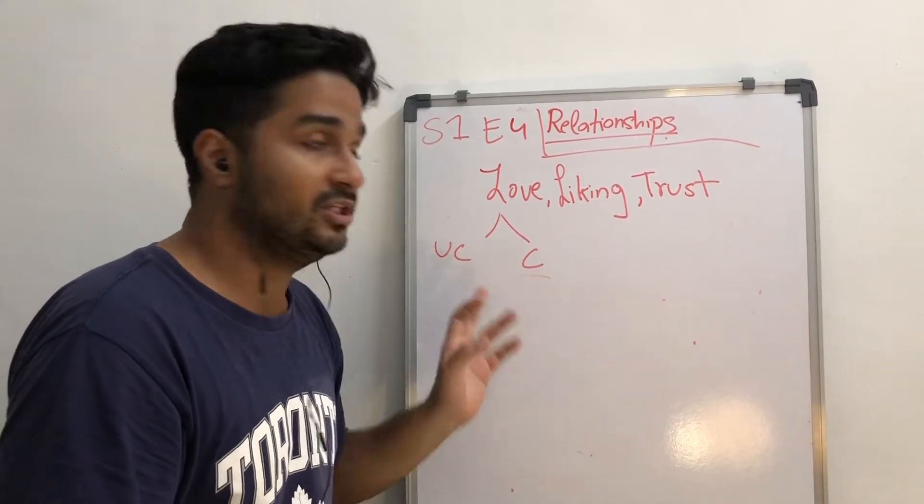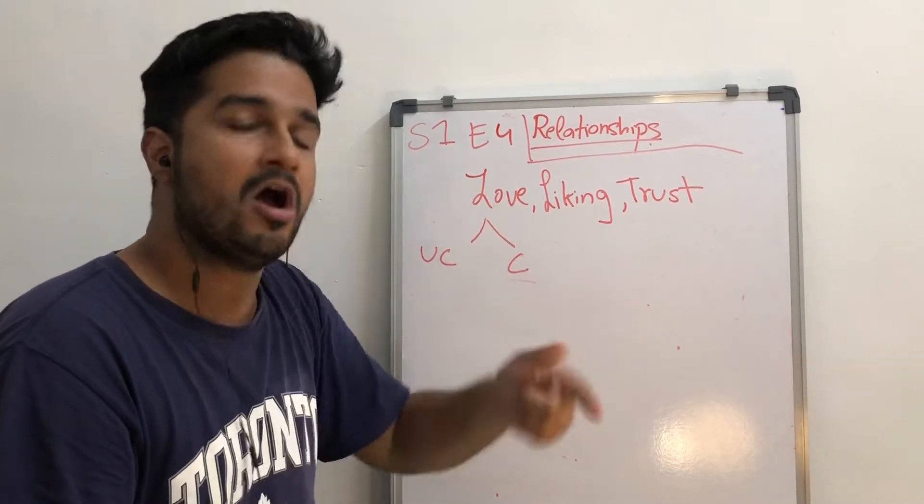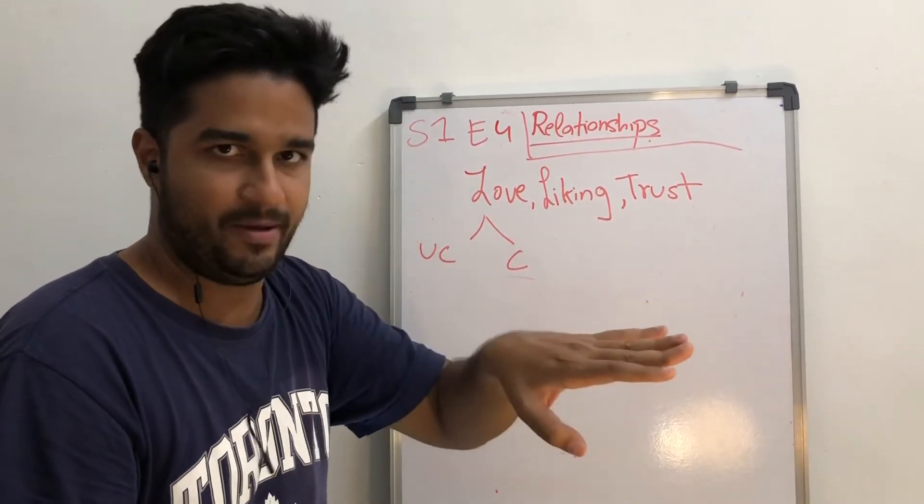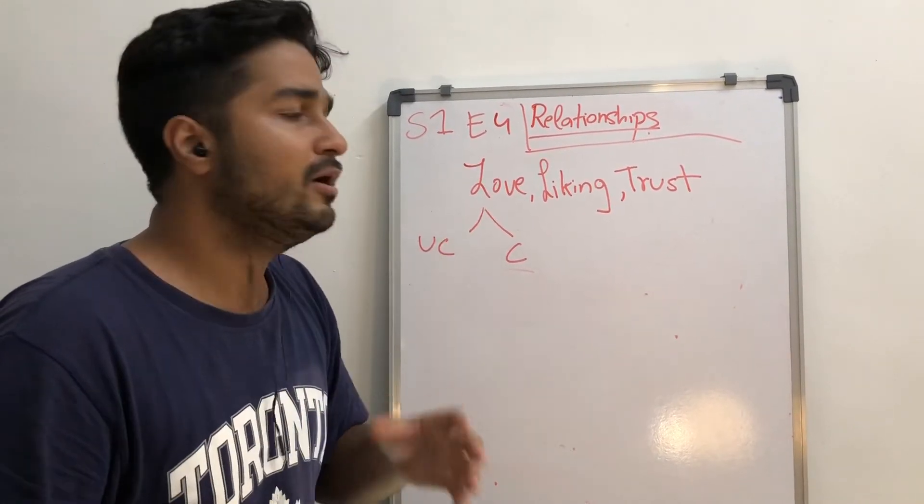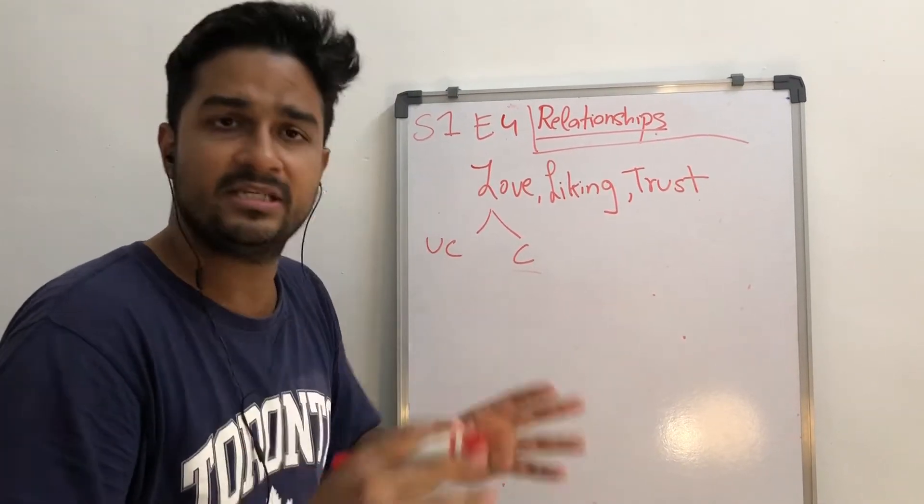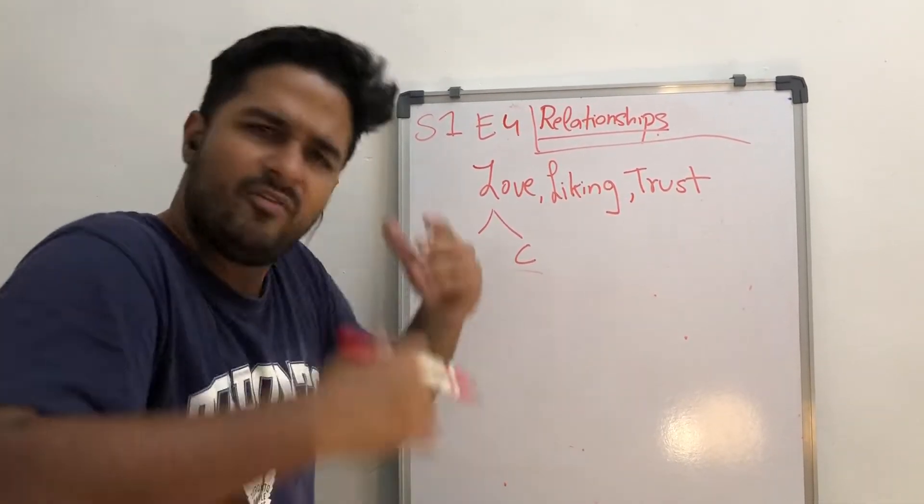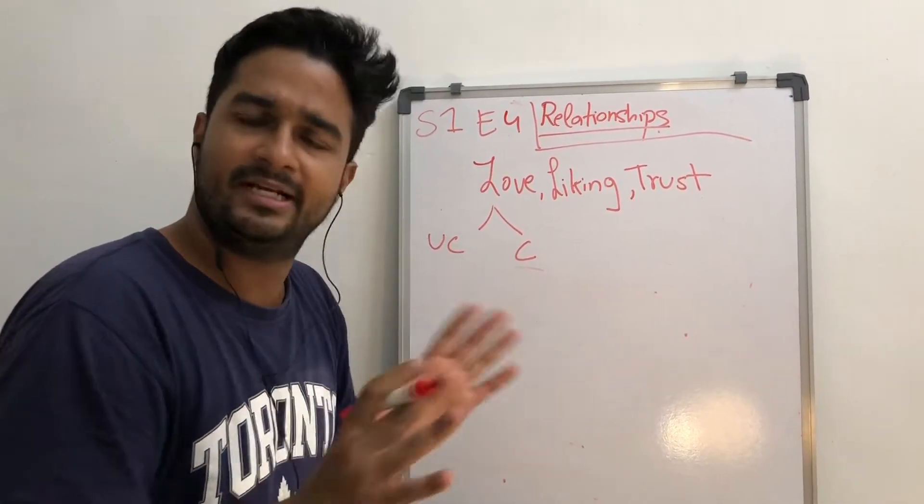But for unconditional love, even if they leave you, even if they cheat on you, you still have unconditional love for them. That means you are still in love with them in a way, but not conditionally. So unconditional love and conditional love are two different things. You can have both for the same person, or you can have one and not both.